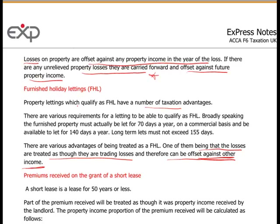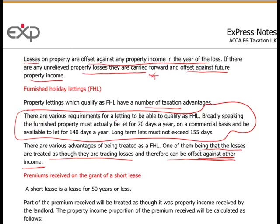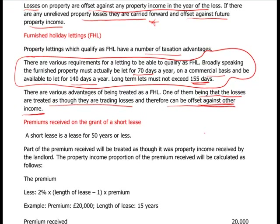To qualify as a furnished holiday letting, there are specific rules you need to learn. The property must be available to let for at least 140 days a year on a commercial basis (i.e., with a profit aim), and must actually be let for at least 70 days. No single person can occupy it for more than 30 consecutive days, so you can't just rent to a neighbour or friend. Long-term lets must not exceed 155 days — essentially the property must turn over tenants on a regular basis.